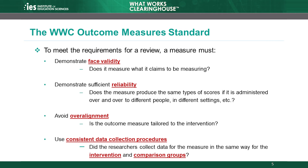Third, the measure must avoid over-alignment. When an outcome measure is closely aligned or tailored to the intervention, the study findings may not be an accurate indication of the effect of the intervention. We'll go deeper into this concept shortly.